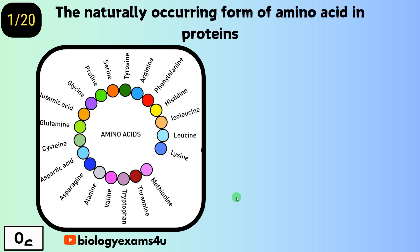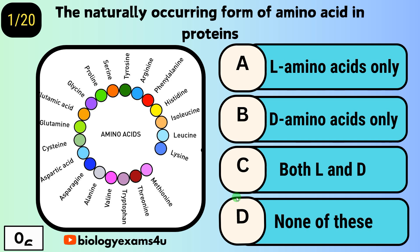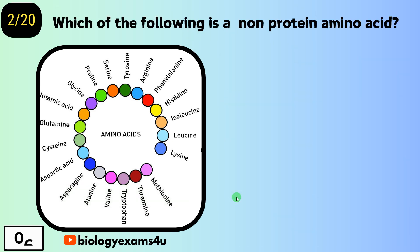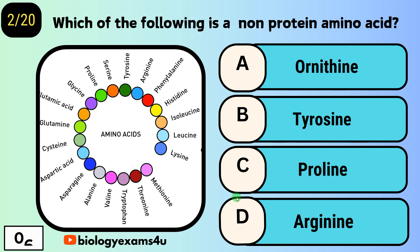The naturally occurring form of amino acids in proteins are: option A, L amino acids only; option B, D amino acids only; option C, both L and D; option D, none of these. Your time starts now — you have seven seconds to answer. The answer is L amino acids only.